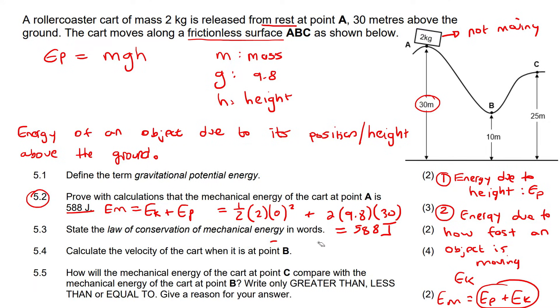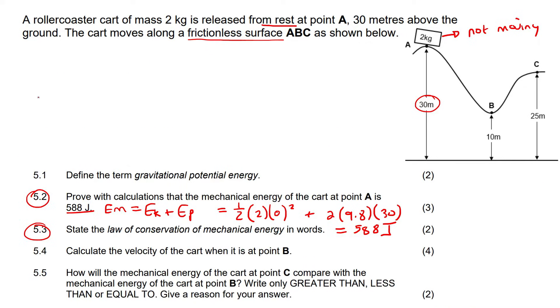Okay, now, moving on to question 5.3, it says, state the law of conservation of mechanical energy. Now, let me first explain that. So, we've said that in grade 10, we've got two types of energy. We've got potential, which is, you can think of it as due to the height, and then we've got kinetic, which is due to how fast. Okay. And then, when you plus them together, when you plus them together, that gives you mechanical.